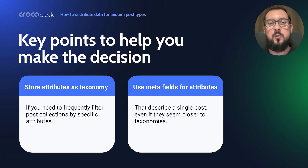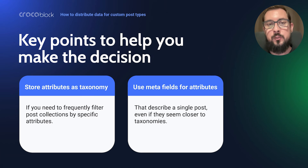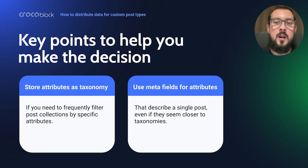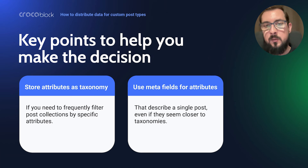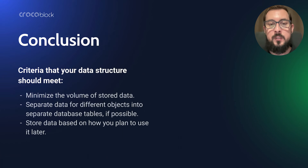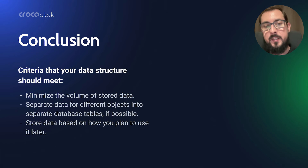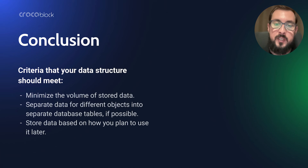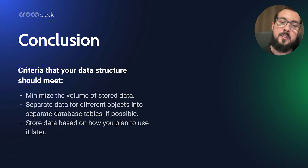Let's highlight some key points to help you make that decision. If you need to work with post collections, especially filtering them by specific properties, it's better to store most of the additional data as taxonomy terms. All properties that logically suit taxonomies or are borderline between taxonomies and meta fields should be stored as taxonomies. If your main goal is to optimize a single post page, it makes sense to use meta fields even if by logic this data seems closer to taxonomies. Let's summarize our research with a set of criteria that your data structure should meet and a checklist for modeling this data structure.